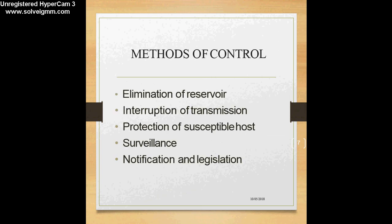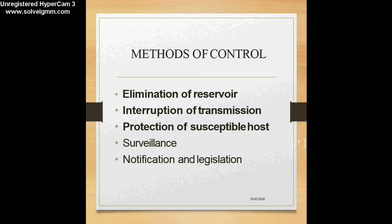Now let's look at what are the methods of disease control. There are five methods: first, elimination of the reservoir — you remove the place where the organism can survive, multiply, and replicate; second, interruption of transmission; third, protection of the susceptible host; fourth, surveillance and containment; and fifth, notification and legislation.